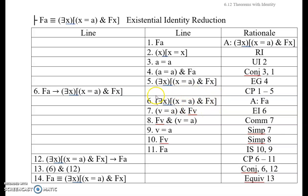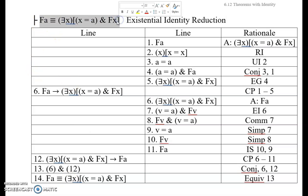Having obtained what we wanted, we discharge our assumption and get the antecedent arrow the last thing we got. Now we're off to prove the right-to-left direction. We assume the existential, and we're going to try to get FA from that. So we existentially instantiate, and you get V is identical with A and FV. We split them apart so you've got them available. Now you've got a really interesting idea: you've got V is identical with A, and V has the property F. By identity substitution, A is going to have the property F, and that's exactly what we were trying to prove. This important theorem is relevant in philosophy courses, especially metaphysics.